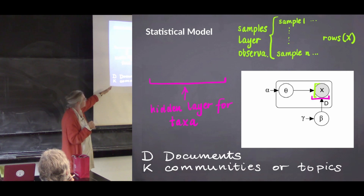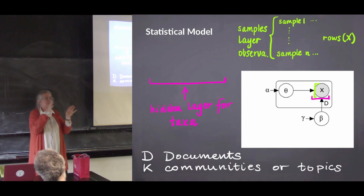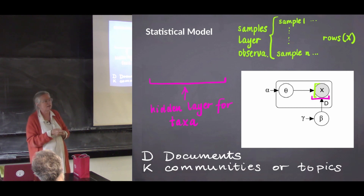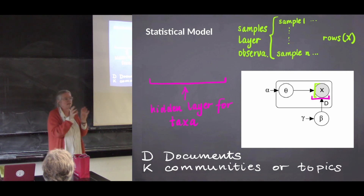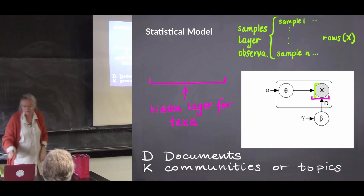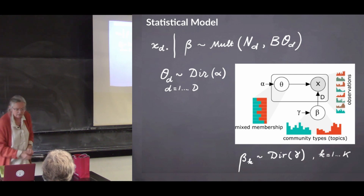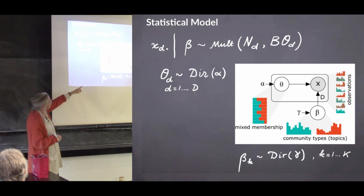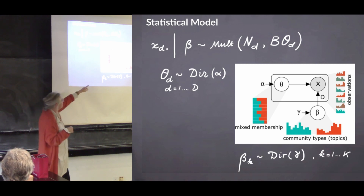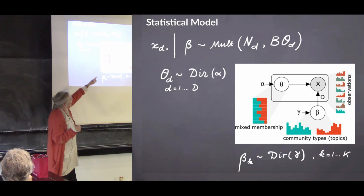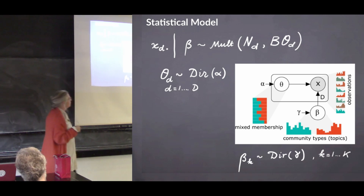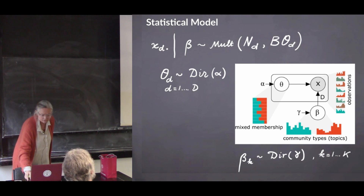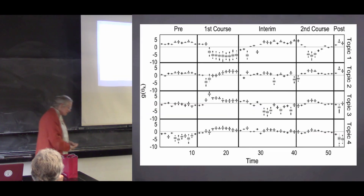You have to decide on the number of communities — that's a number you might change. It's a bit like the clustering parameter: you usually take a slightly larger number, then see if some are empty, and scale down. We have a mixed membership model with different community types having different distributions over taxa. For each observation it comes from one topic or another, and they assemble together.